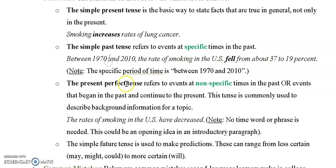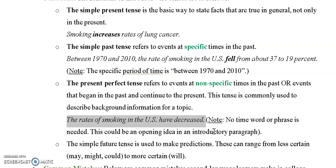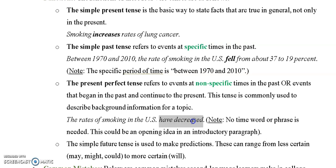Let's contrast that with the present perfect tense, which refers to events at non-specific times, or something that began in the past and continues to the present. This tense is commonly used for background information — something that has happened in the past, but not at a specific time. For example: 'The rates of smoking in the US have decreased.' Notice there is no time word or phrase here. This is a little more complicated than the simple past, especially because we don't use time words with it.